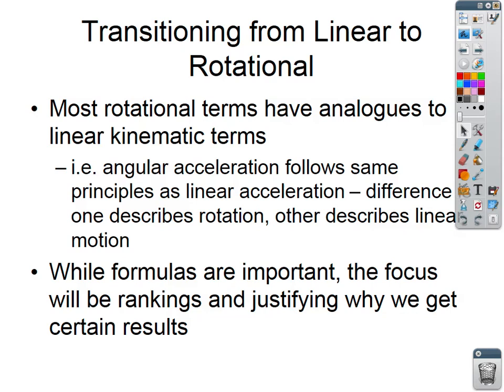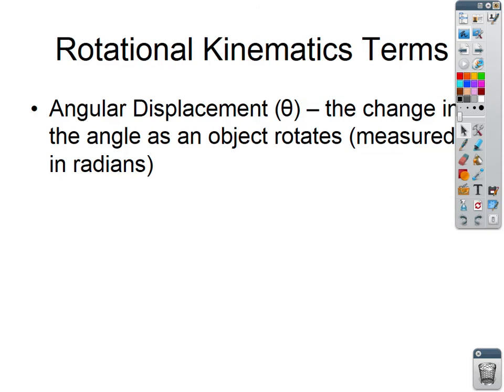Our rotational kinematic terms: we have angular displacement, which is going to be theta. It's going to look like an angle, and this is the change in the angle as an object rotates. We do measure this in radians, but we will not be using any trig — no cosine of 2π or sine of π/2. When something rotates 2π, that means it rotates all the way around the circle; 2π is a full circumference when the radius is 1.